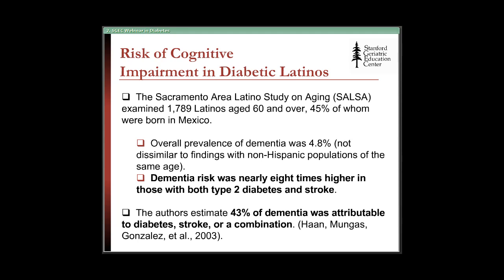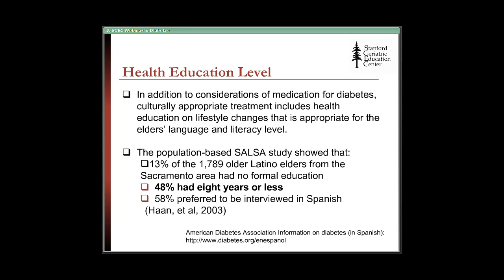A study done in Sacramento called the SALSA study surveyed 1,789 Latinos aged 60 and over. They found that although the overall prevalence of dementia was about the same as non-Hispanic populations of the same age, 43% of patients with dementia had it attributable to diabetes, stroke, or a combination. So as you see your Mexican American ethnic elder who has had diabetes for a while, think about the fact that they may be at higher risk of dementia. The SALSA study also found that almost half of the 1,800 older Latino elders had eight years or less of formal education.